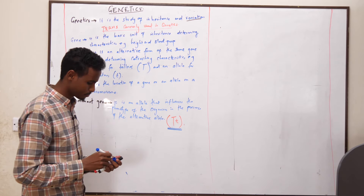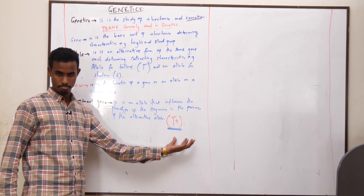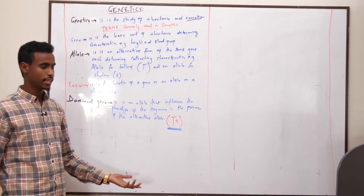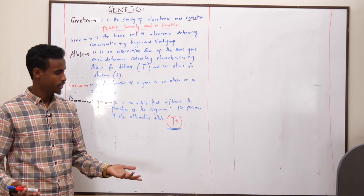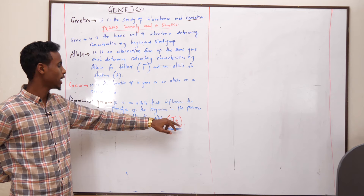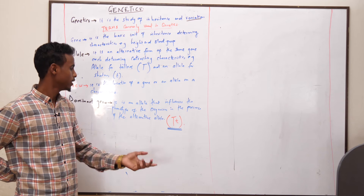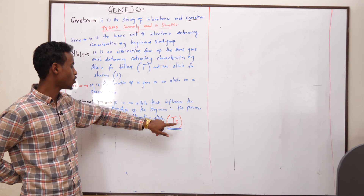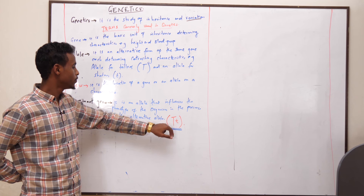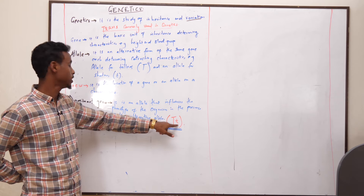Let me emphasize this because most learners don't get it clearly. As you can see, Tt is the genotype of the organism. When we give the phenotypic description, we say that this organism is tall. We have an allele for tallness as well as an allele for shortness, but phenotypically this organism will be tall. Because this allele is dominant over the other allele, the allele for tallness will express itself phenotypically in the presence of the other allele.